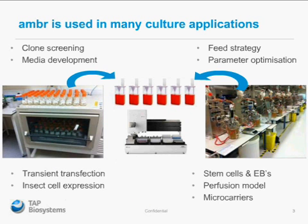AMBA has been applied in many companies to replace the shake flask and the reactors, but we've also seen it in small-scale parallel protein production, transient transfection, in-cell expression, and a range of regenerative medicine applications with suspension stem cells, embryoid bodies, and microcarrier cultures. We've also recently seen a couple of companies looking at a chemostat model for perfusion culture — being able to scale that perfusion type process down to the 10 to 15 mil scale and get high throughput there.